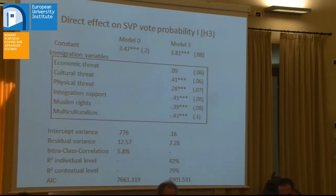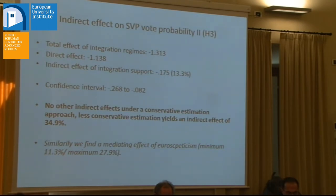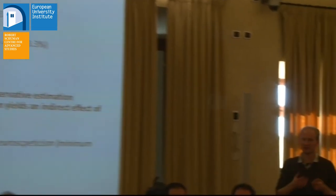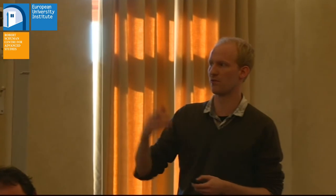What we find quite obviously is that immigration attitudes matter a lot for voting for the Swiss People's Party. They have a significant effect — all of them except economic threat, which becomes insignificant when entered with controls but is significant when entered alone. In a very conservative estimation approach controlling for many other immigration attitudes, the indirect effect is rather small: about 13% of the effect between integration regimes and Swiss People's Party support is indirect. In a less conservative approach looking mainly at integration support, it becomes almost one-third.